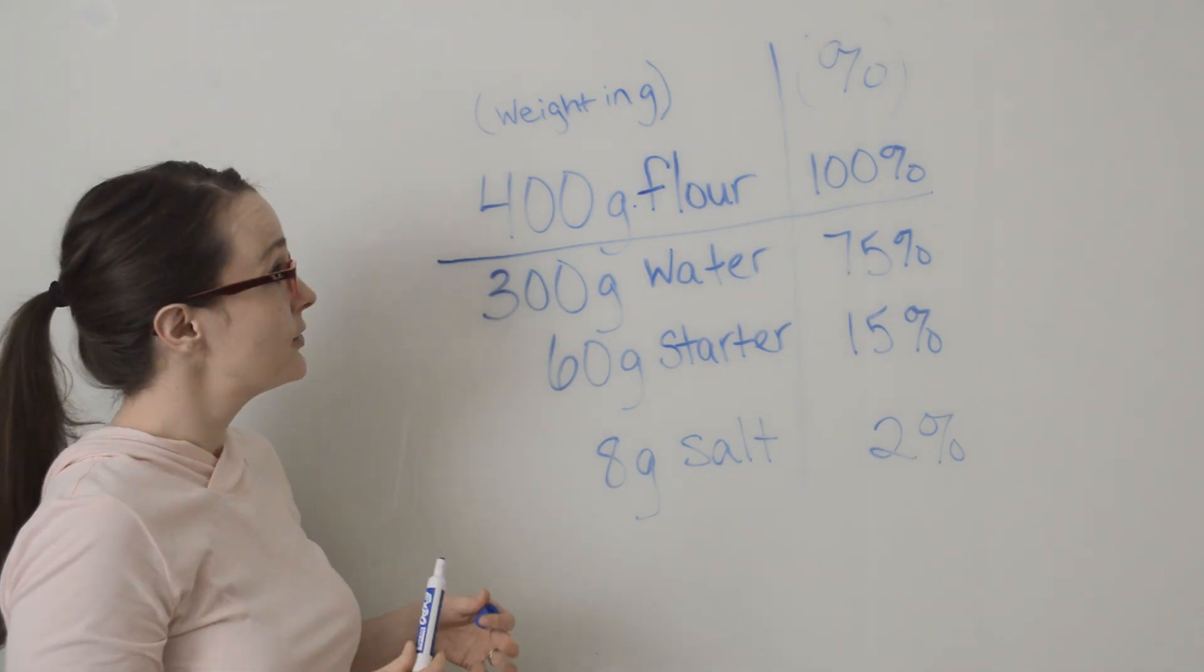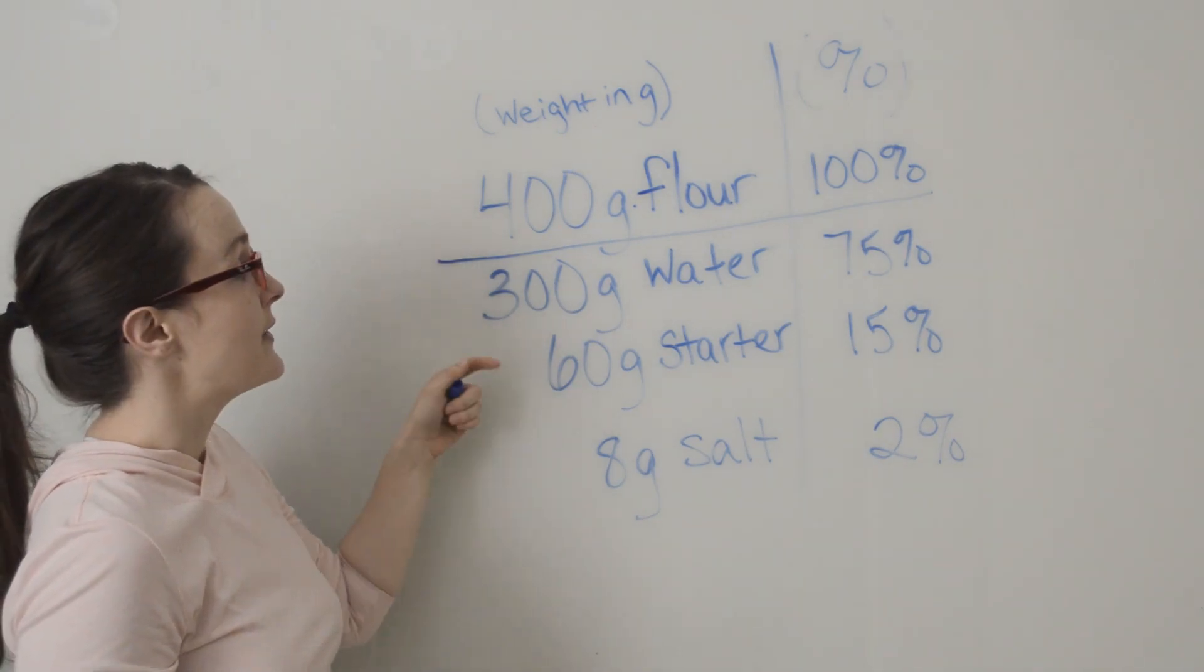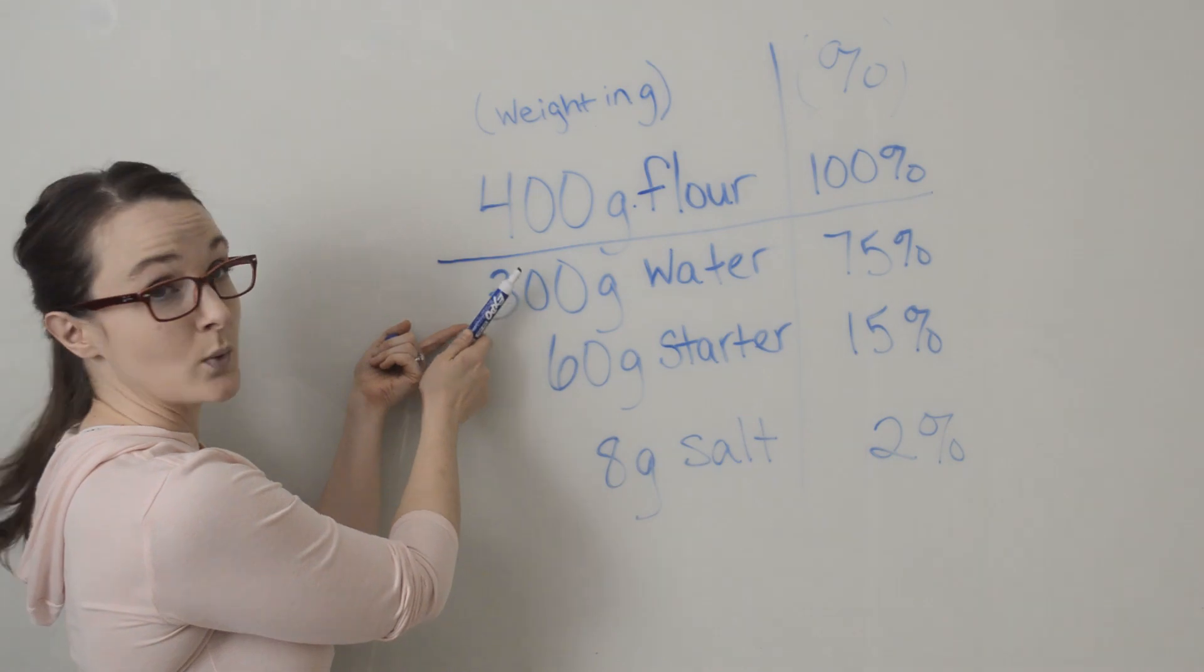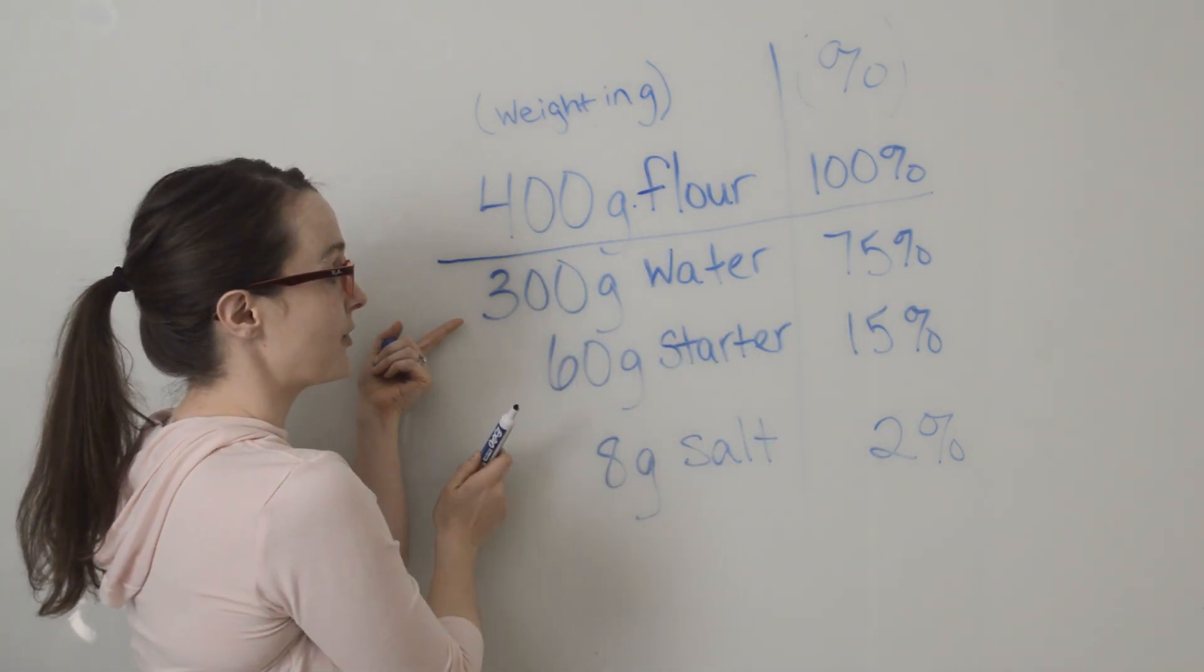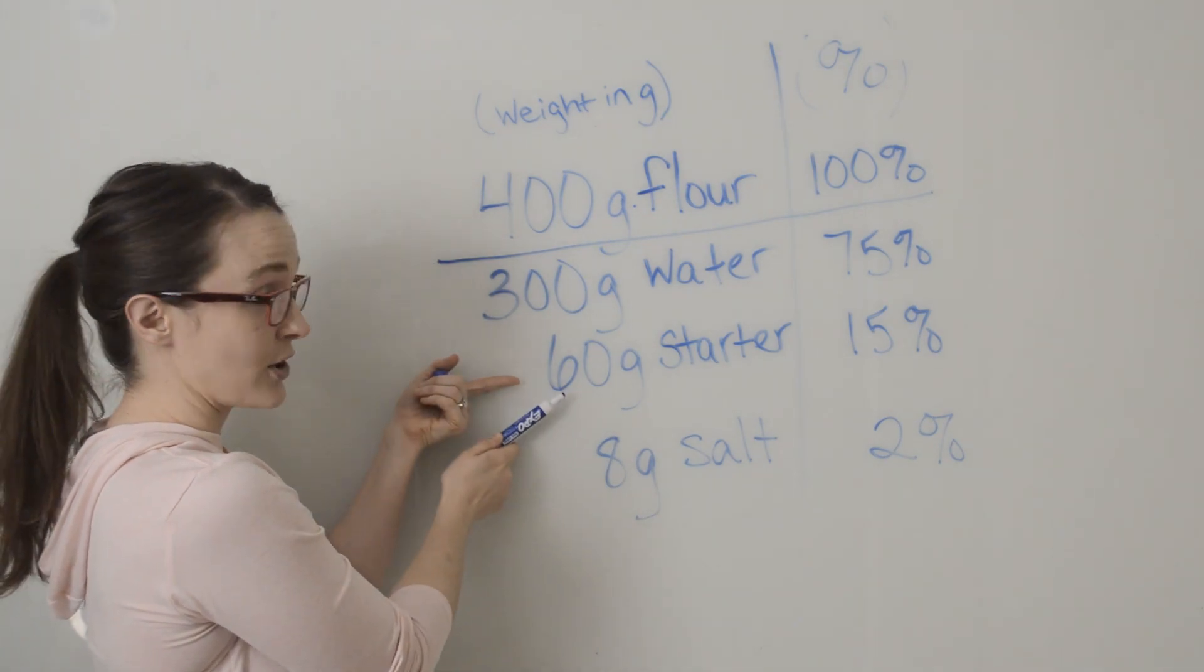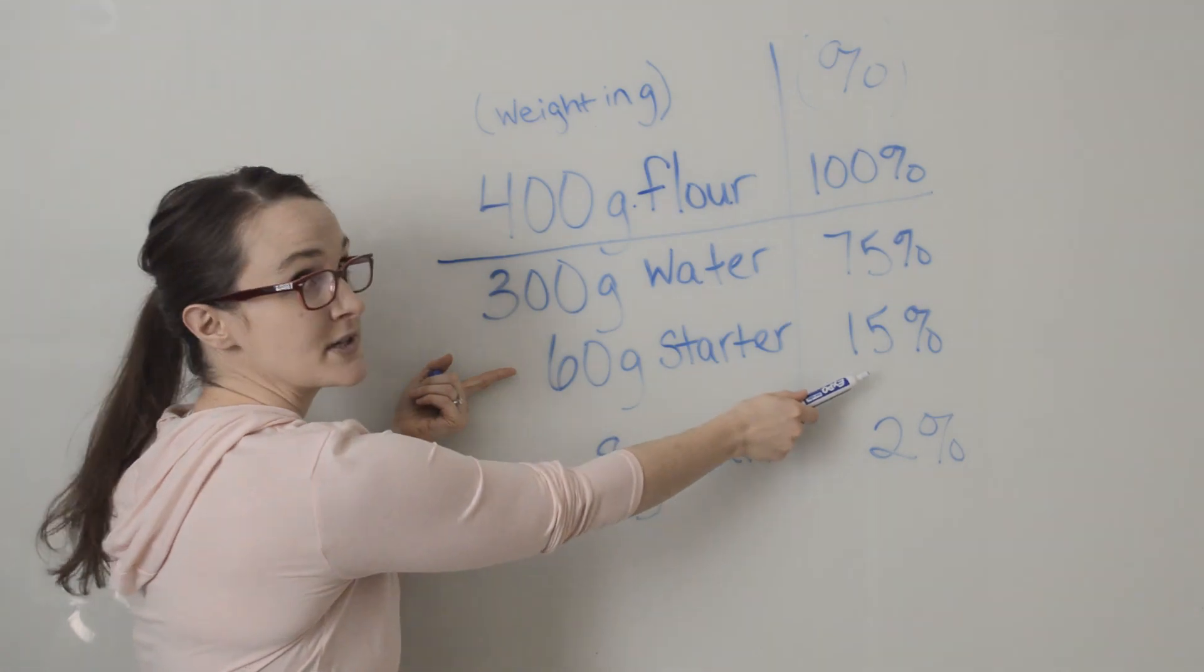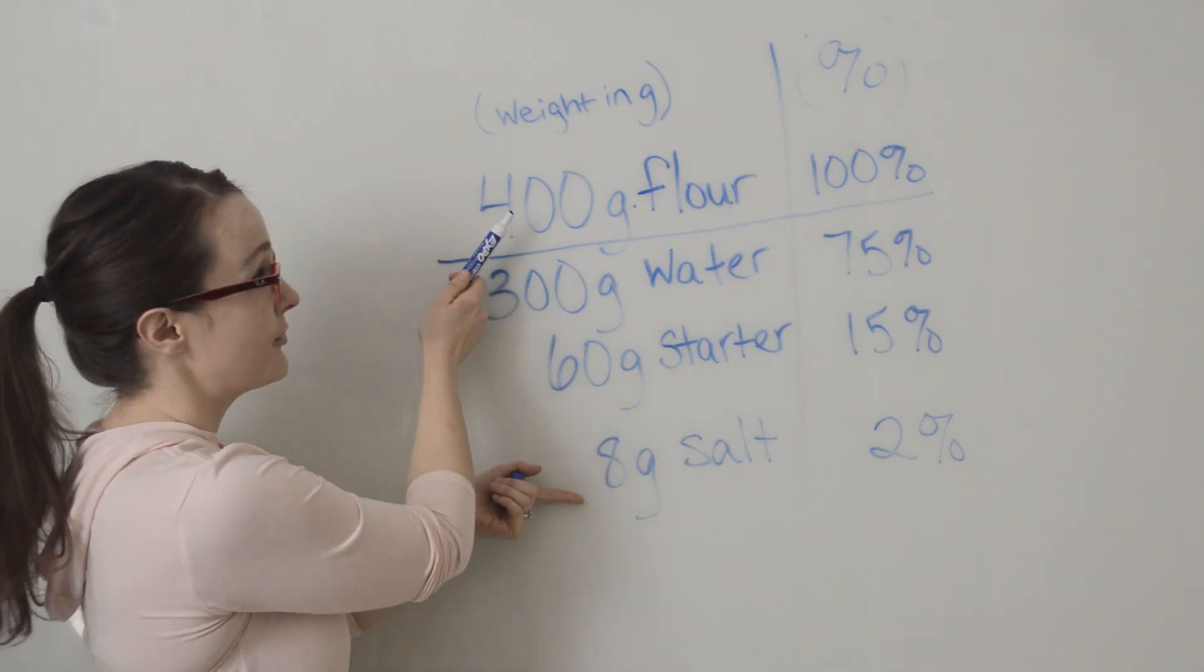So if your formula is 400 grams of flour and then you have 300 grams of water, you say 300 is what percent of 400? Well, 300 is 75% of 400. I've got 60 grams of starter. What percent of 400 is 60? It's 15%. And then I have 8 grams of salt. So what percent of 400 is 8 grams? It's 2%.